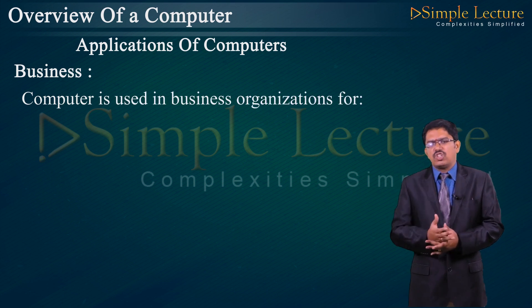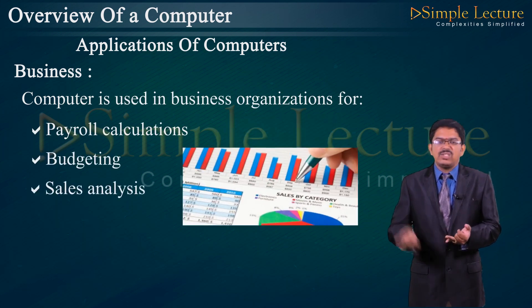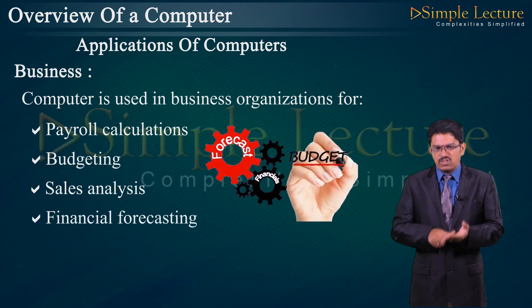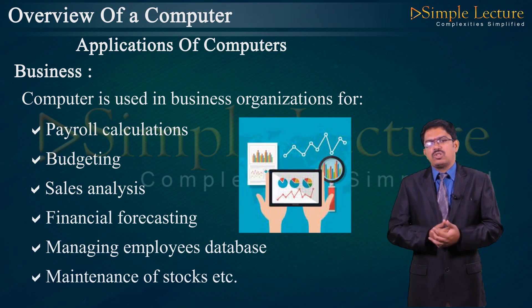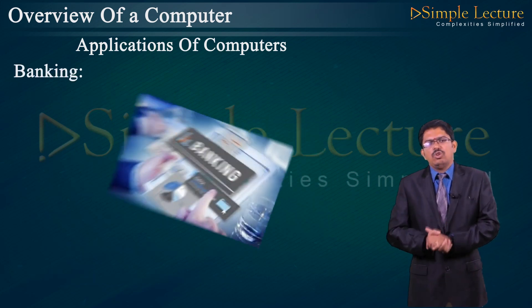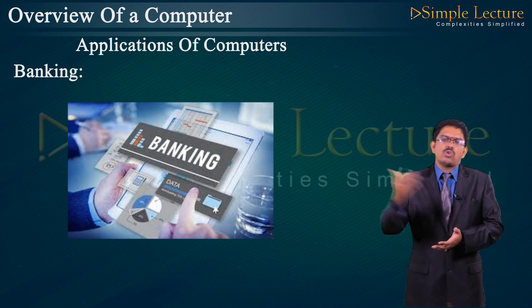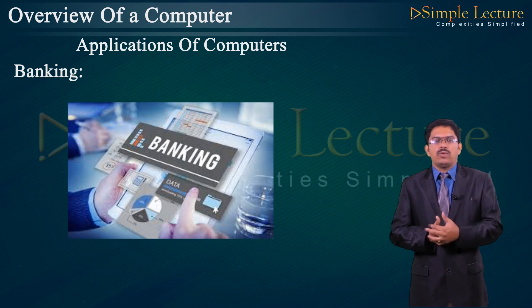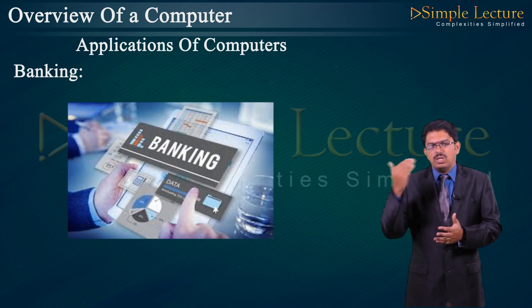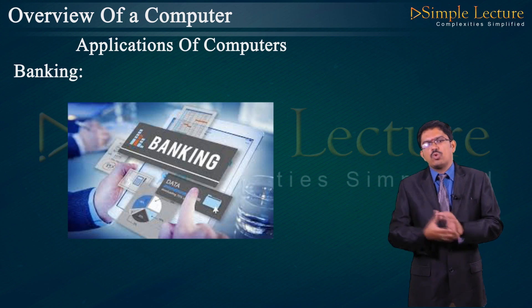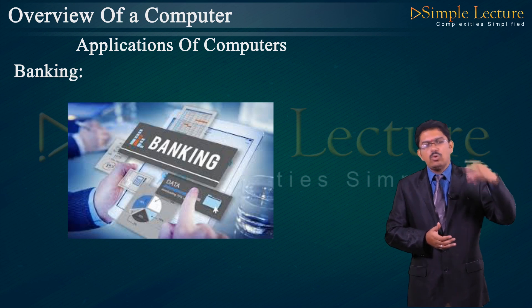Second application: Business. Computers are used in business organizations for payroll calculation, budgeting, sales analysis, financial forecasting, managing employee databases, and maintenance of stocks. Banking: computers are used extensively in banking for storing databases. Banking software stores details such as overdraft, current balance, deposit, and ATM details. Each bank has a server connected to multiple clients across branches.